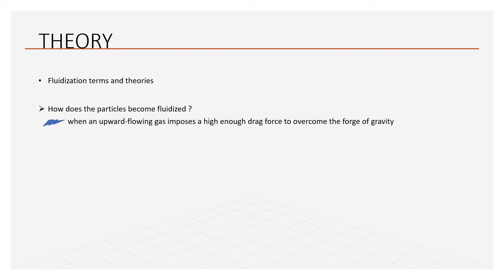The particle imposes an equal and opposite drag force on the gas. Thus, as a particle becomes more fluidized, it affects the local gas velocity around it due to drag forces. This effect is minimal for spherical particles compared to irregular shaped particles.